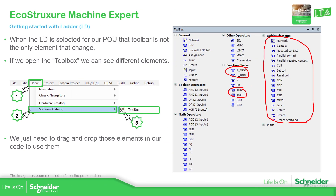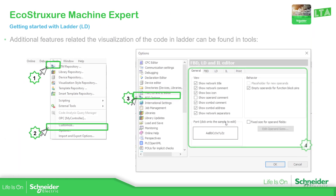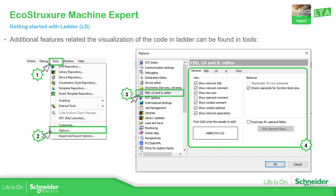Something useful is to modify the view that you have of the ladder. You also have the instruction list and function block diagram, but I'm going to focus only on the ladder. You have the possibility to select different views of the elements. To access this, just go to Tools, then Options, and then select Function Blocks — FBD, LD, and IL editor.